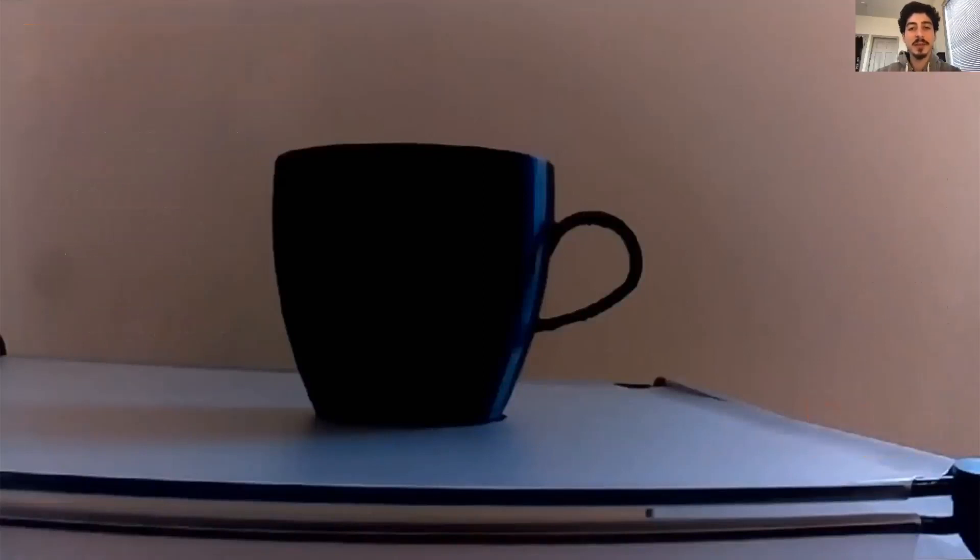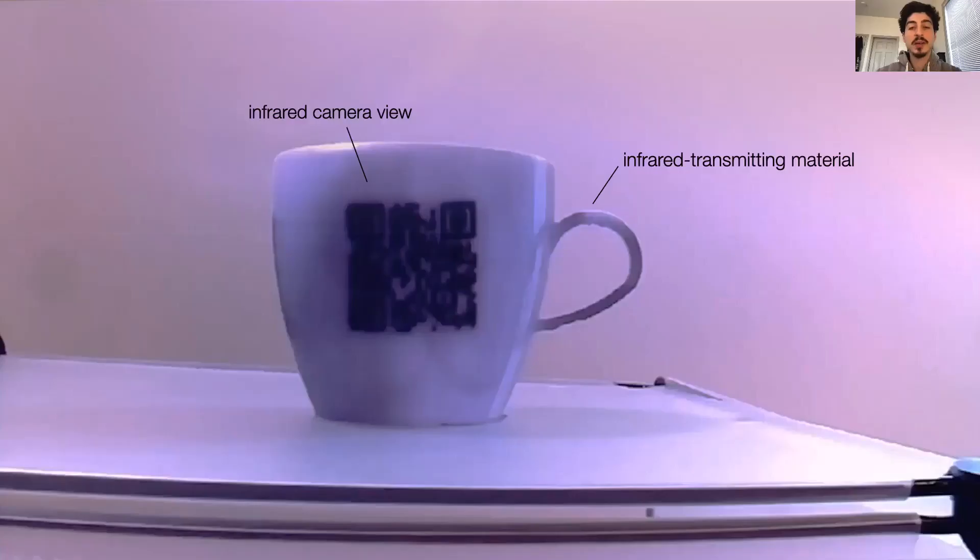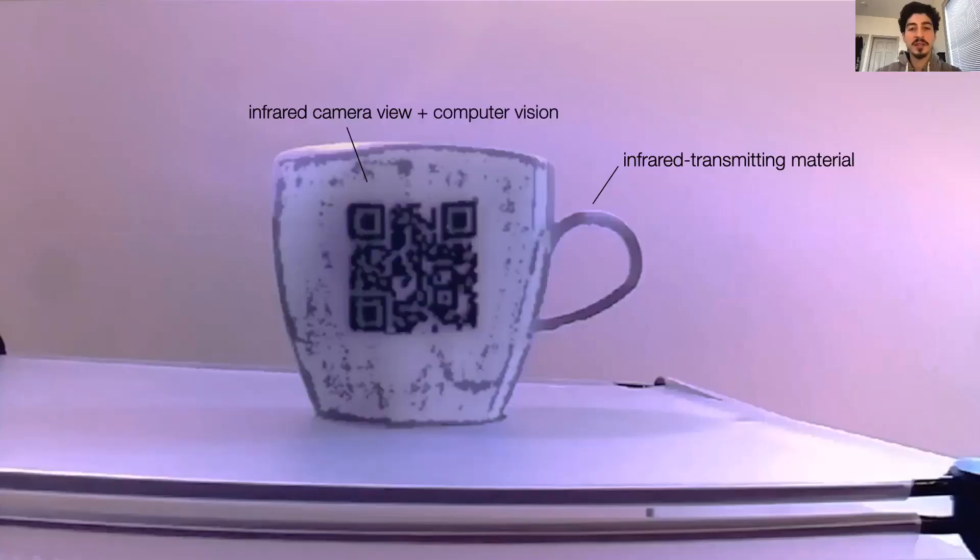Infrared tags are invisible labels embedded into objects that are 3D printed with an infrared transmitting material. Even though you cannot see these tags with the naked eye, they can be captured by using an infrared camera and computer vision techniques.